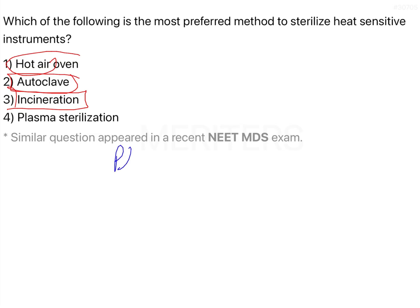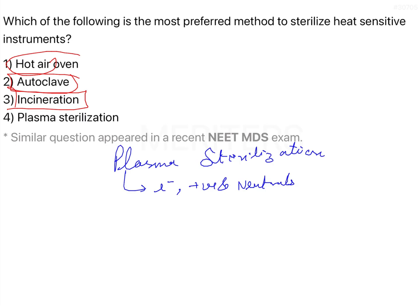But yes, what is plasma sterilization? A plasma is basically a quasi-neutral collection of electrons, positive ions, and neutrals capable of collective behaviour. So this is a cloud — a collection of electrons, positive ions, and neutrals (neutrons), and these are synergistically used. These positive ions are going to be the free radicals which will disrupt the bacteria.